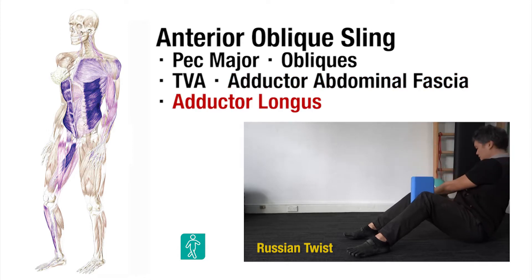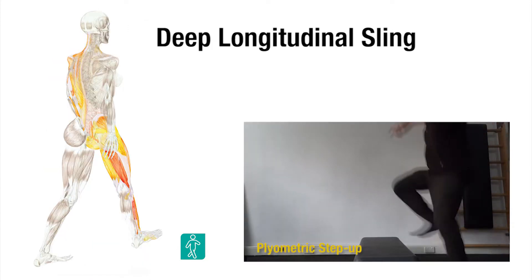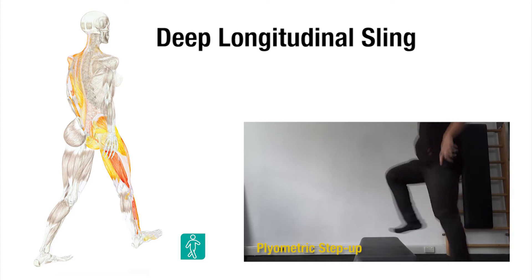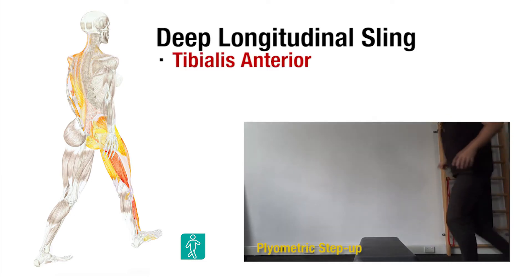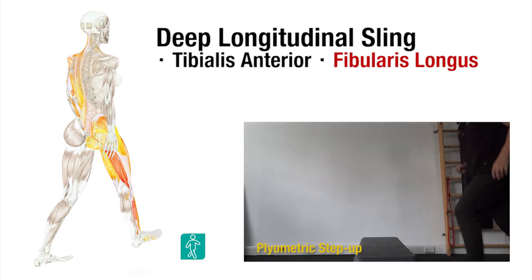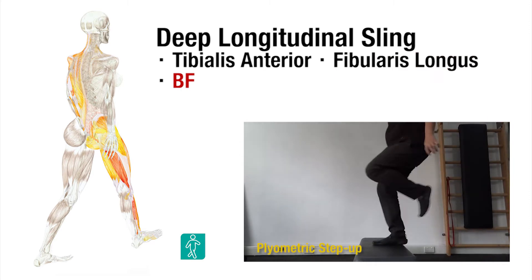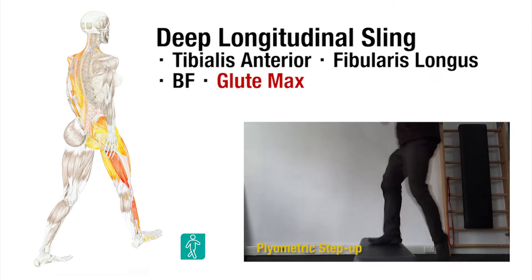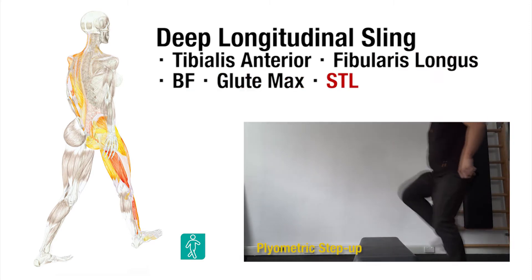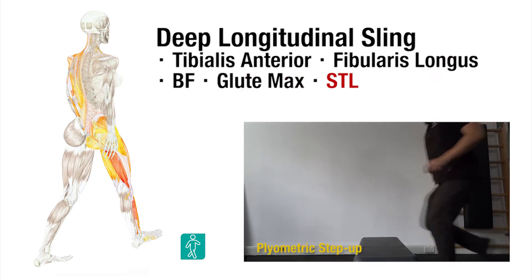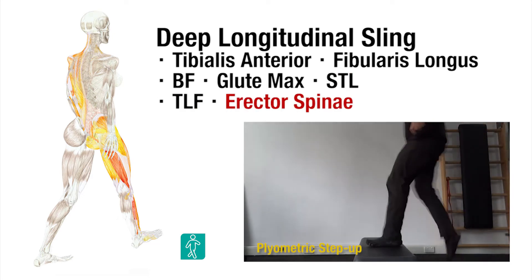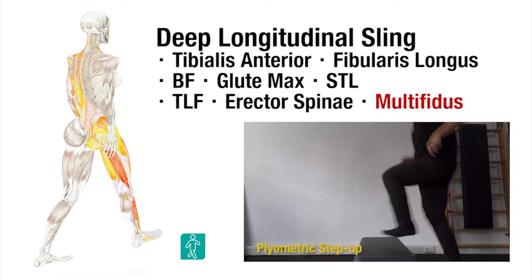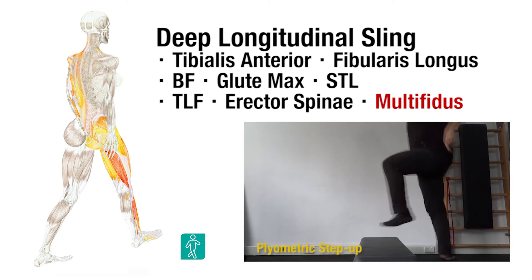And contralateral adductor longus. The deep longitudinal sling consists of tibialis anterior, fibularis longus, bicep femoris, glute max, sacrotuberous ligament, thoracolumbar fascia, and the contralateral erector spinae and contralateral multifidus.